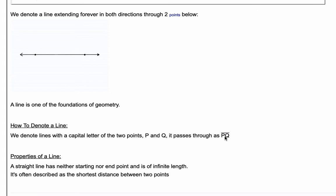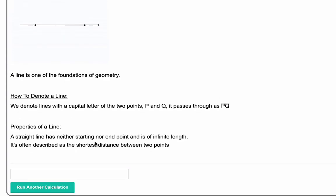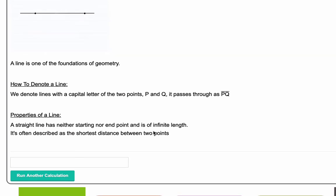So finally, the properties of a line: a line has neither a starting nor an end point, it's of infinite length, which is what I talked about before here with the arrows, and it's often described as the shortest distance between two points.